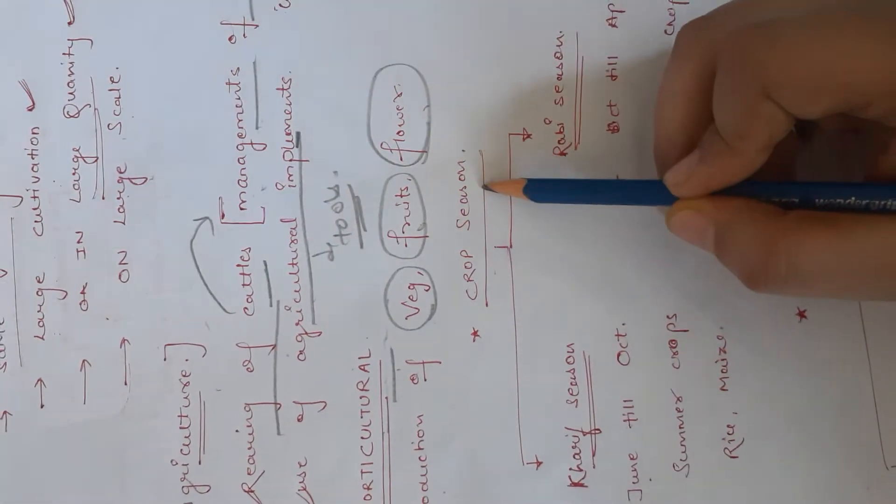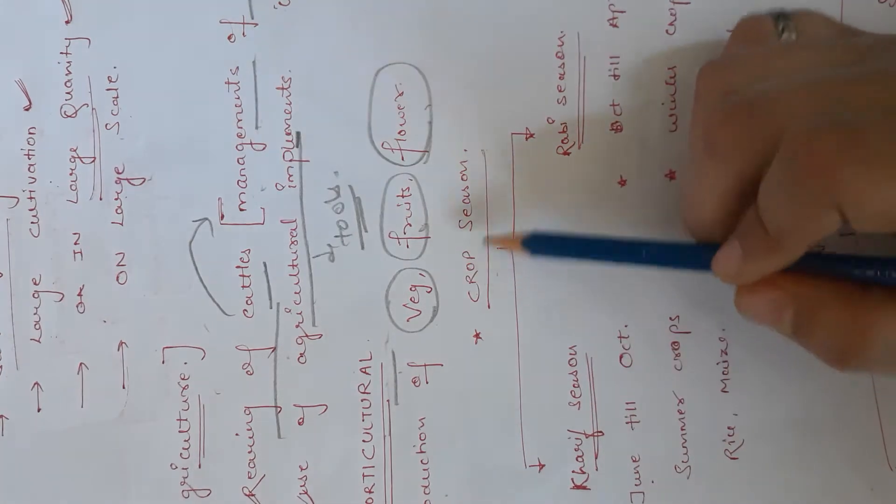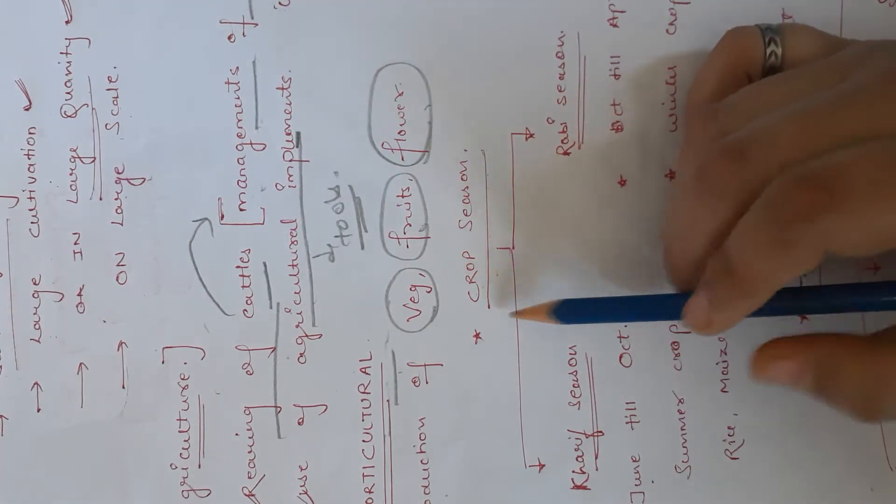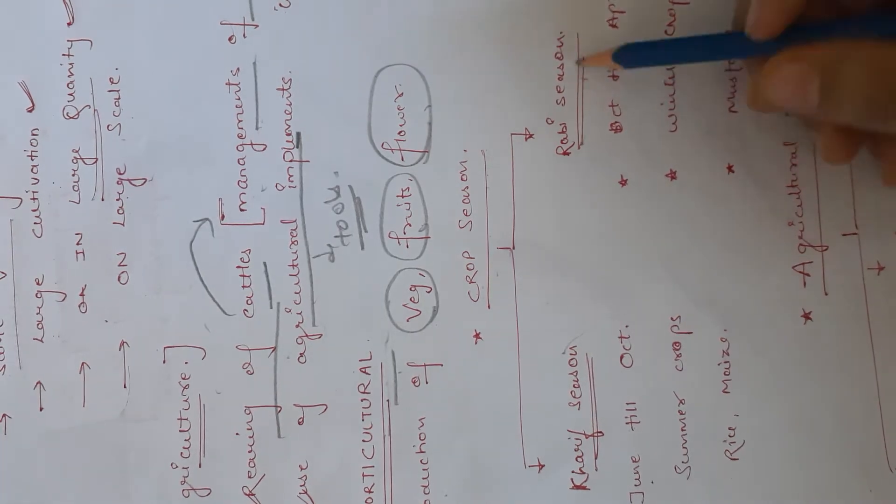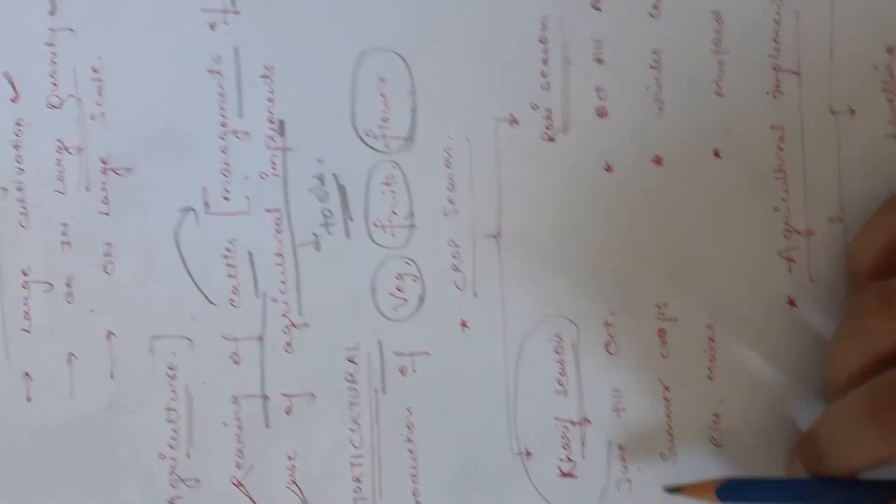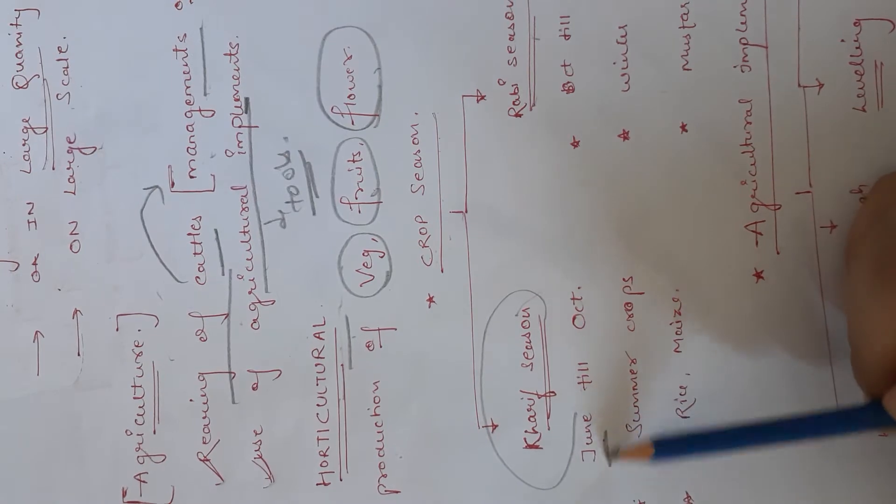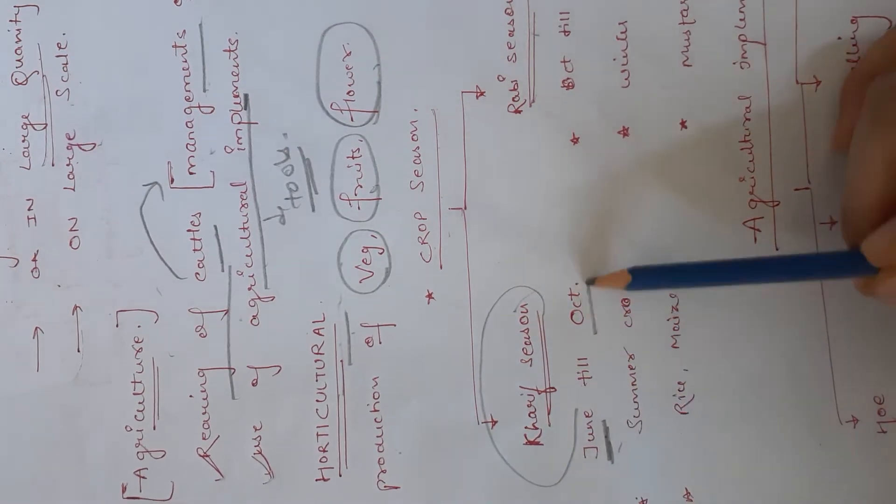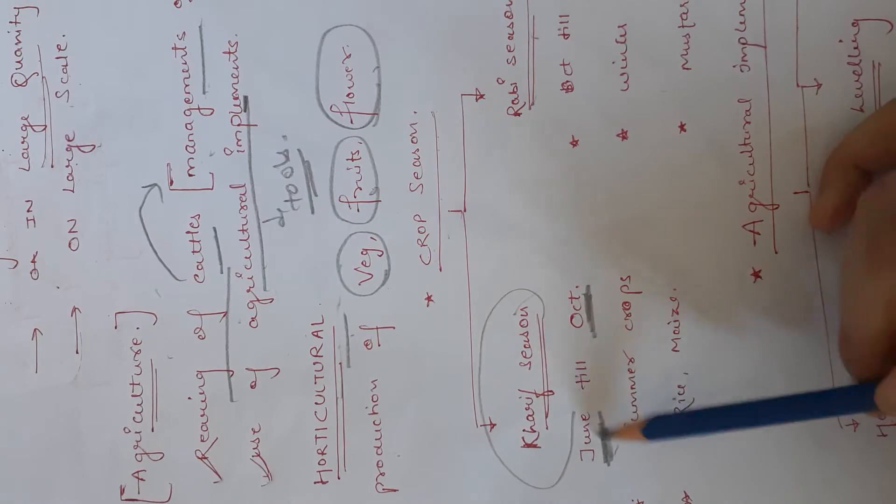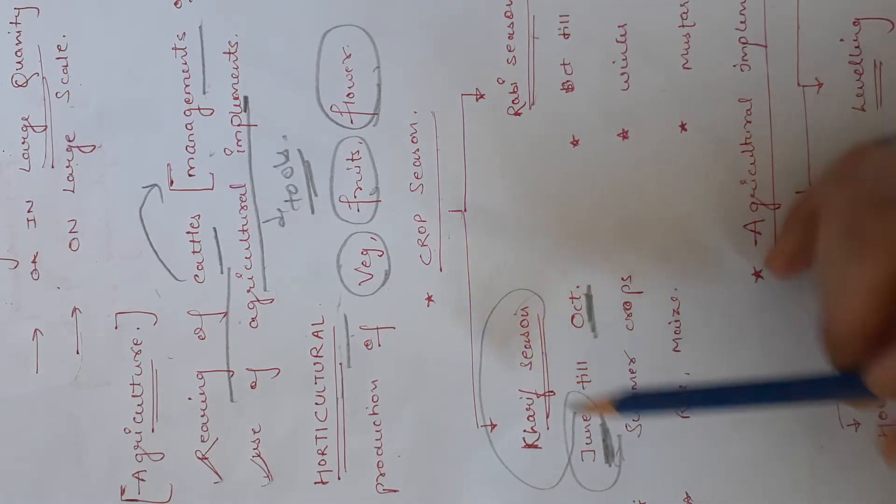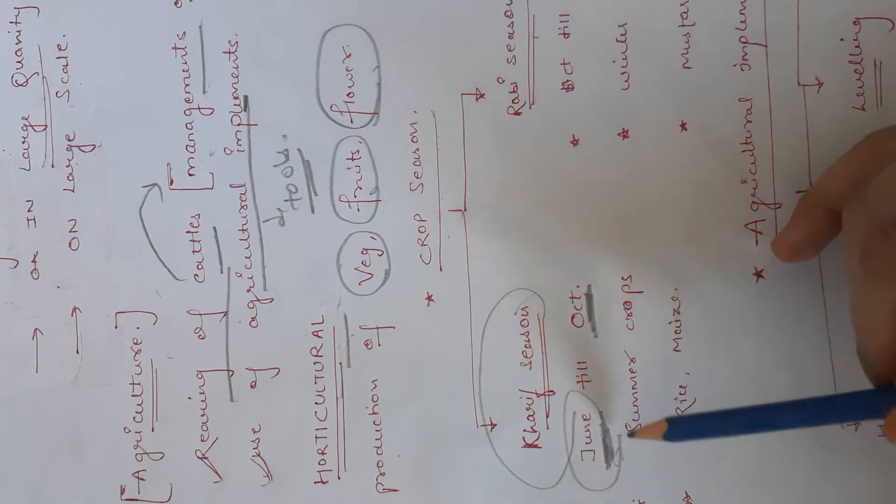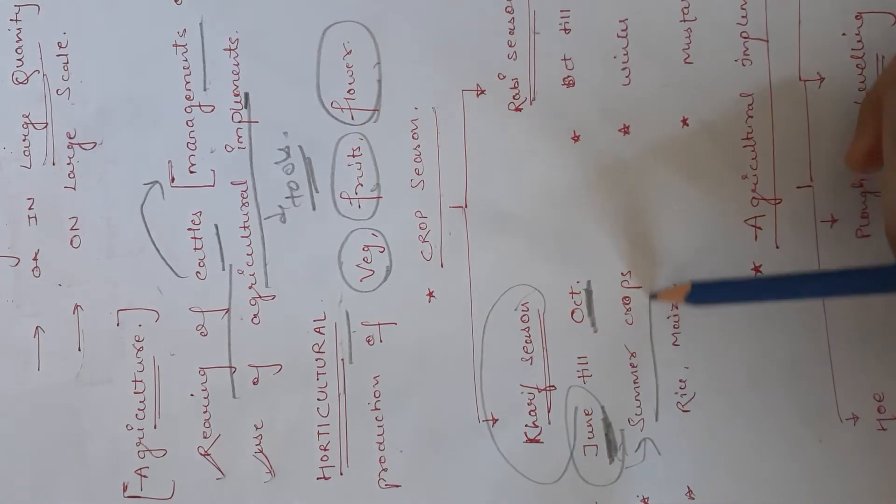Next, crop seasons. There are two seasons we already discussed: the Kharif season and Rabi season. Kharif season which is cultivated in June or harvested in October. If some crops are sown in June, they are obviously summer crops.